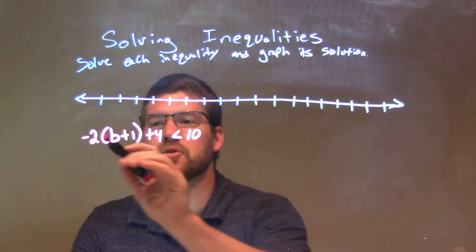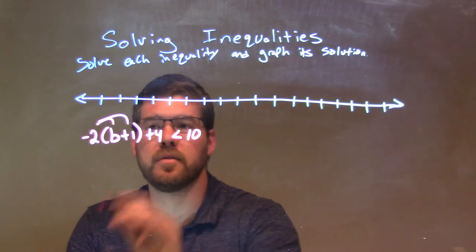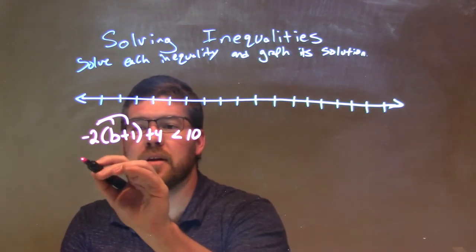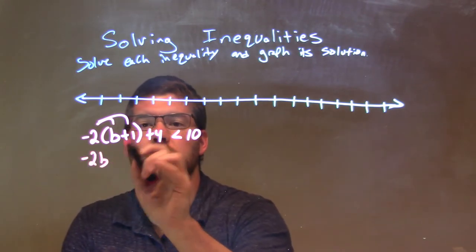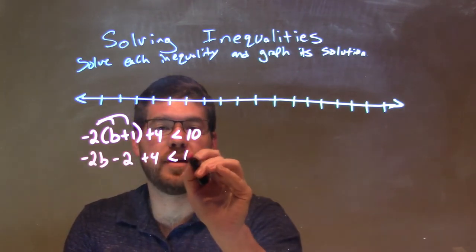The first thing I like to do is distribute this negative 2 across. So, distribute negative 2 to both parts in the parentheses. Negative 2 times b is negative 2b, and negative 2 times 1 is negative 2. And then we have plus 4, and then is less than 10.